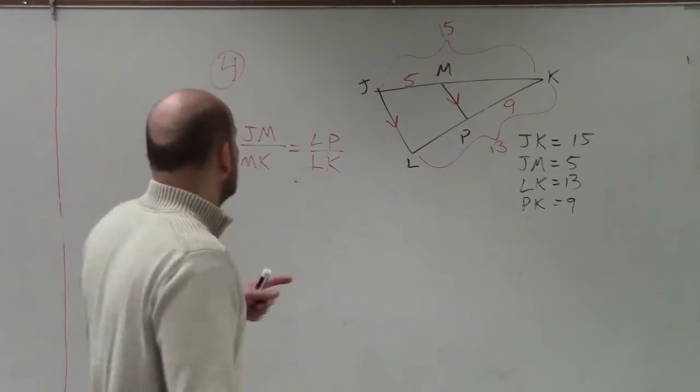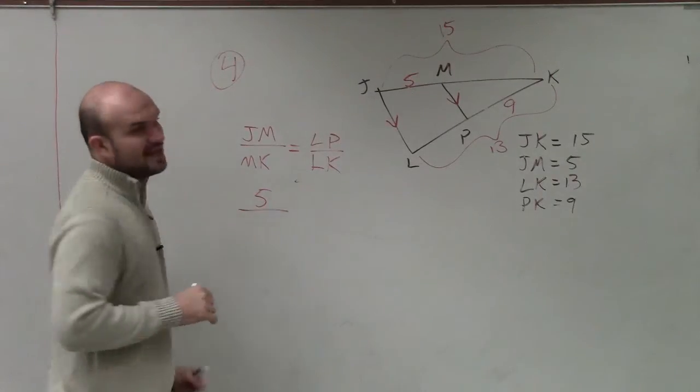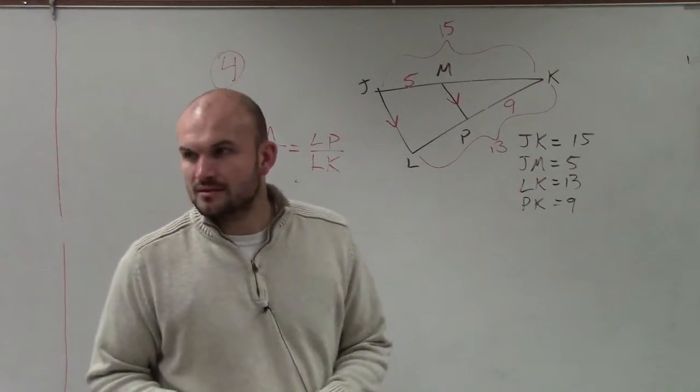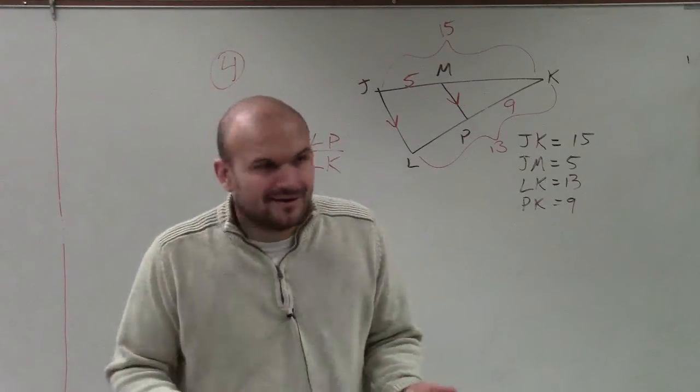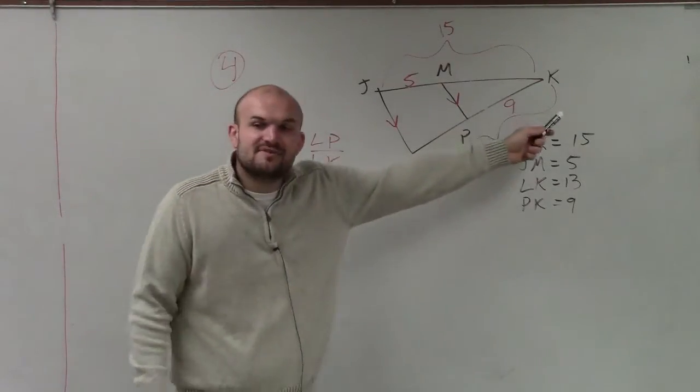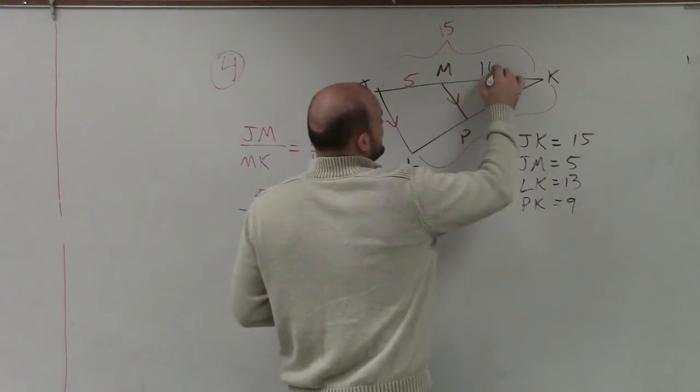So unfortunately, we know what JM is. That's 5. But do we know what the length of MK is? No. But can we figure it out? Yeah. Obviously guys, if the whole length is 15, this is 5, then you guys can say, oh well, that's easy. That's 10.